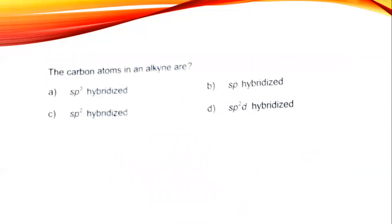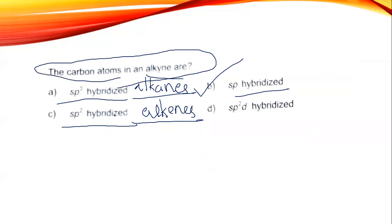The carbon atoms in alkyne are sp hybridized. In triple bond, it is sp hybridized. For alkanes, it is sp3, and for alkenes, it is sp2 hybridized. Please remember the hybridization: alkyne is sp, alkenes is sp2, and alkanes is sp3. These are the hybridizations of various hydrocarbons.